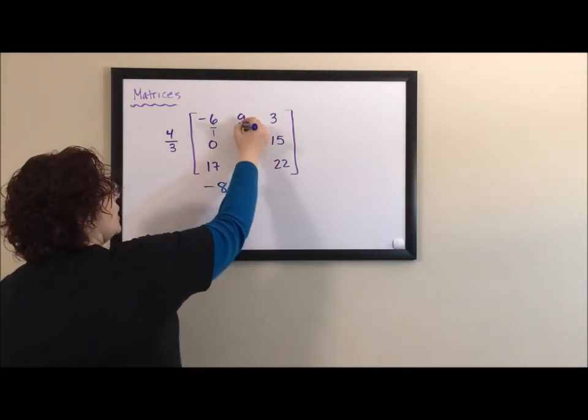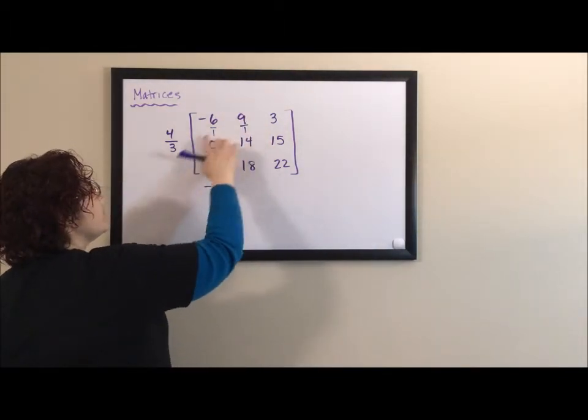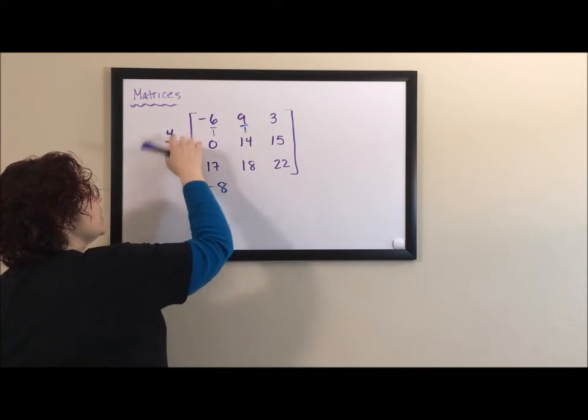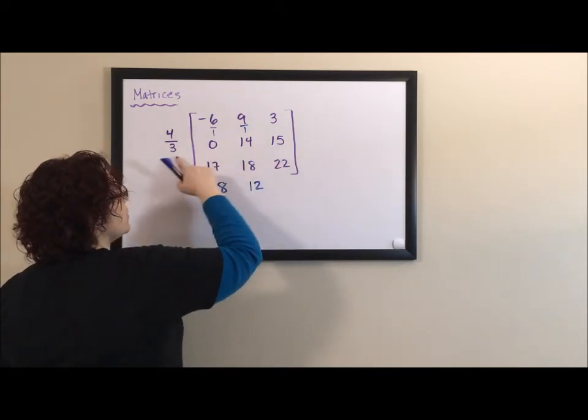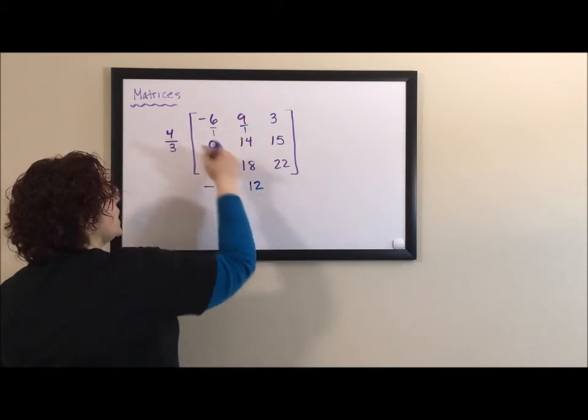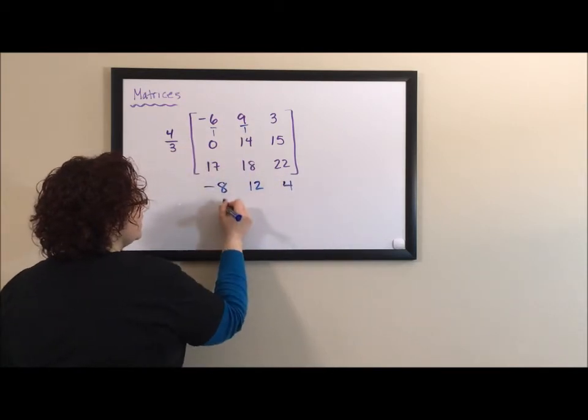So, I look at my next number, nine over one. Nine divided by three is three. Three times four is twelve. Three divided by three is one. One times four is four. I get a zero.